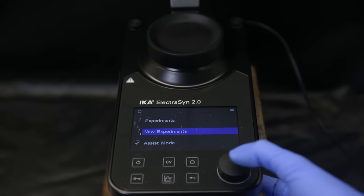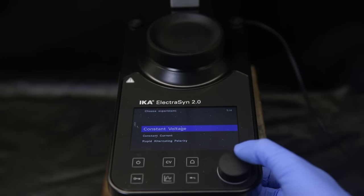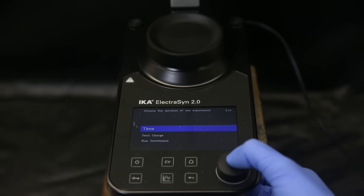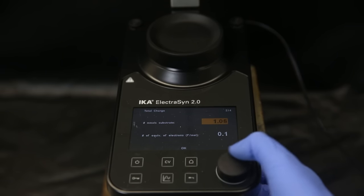First, I go to new experiments and then select constant current since that is what the literature requires. I use the same value as them, which is 12 mA. I'm not using a reference electrode, so I select no. I then select the total charge that should be supplied by the device, which for electrochemistry is measured in Faraday per mole.